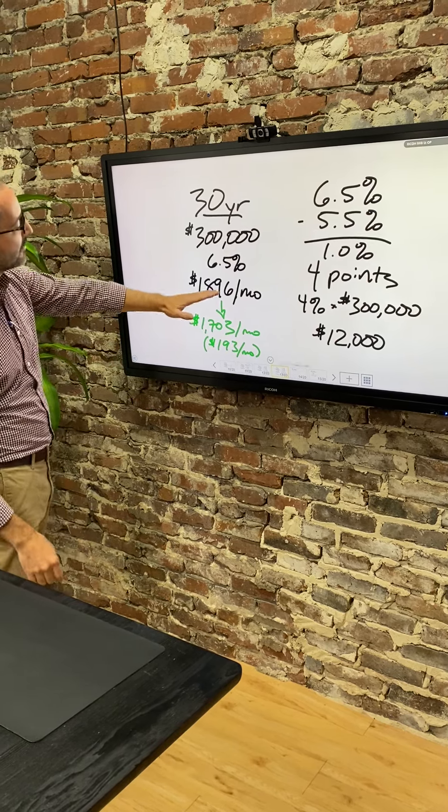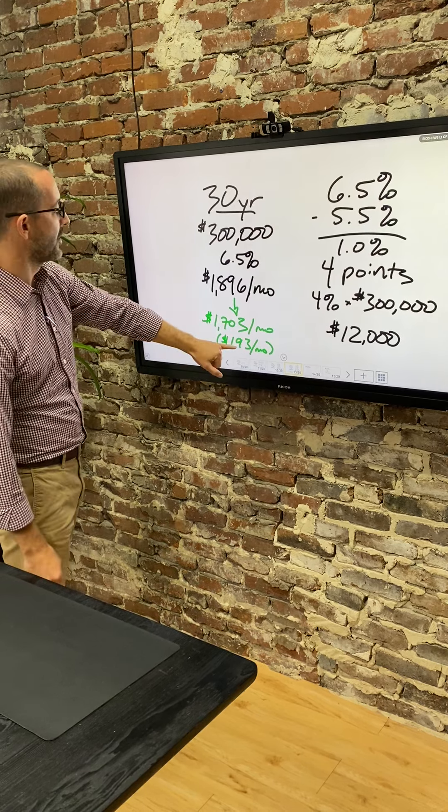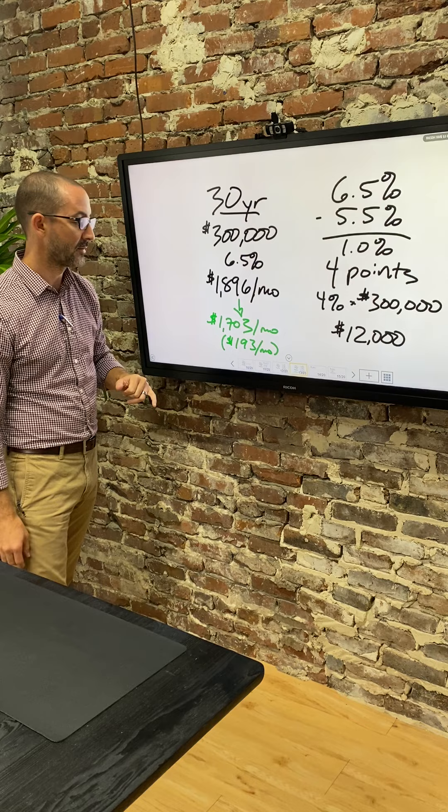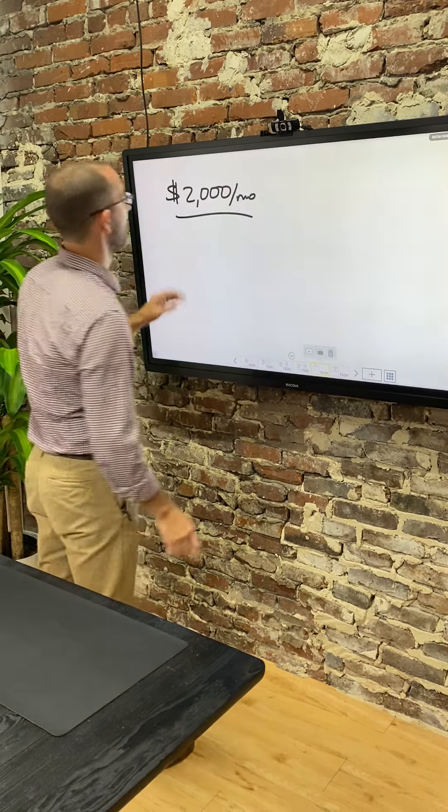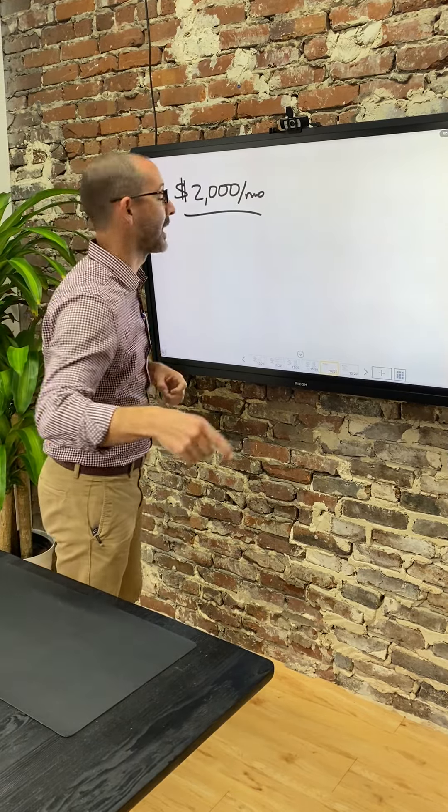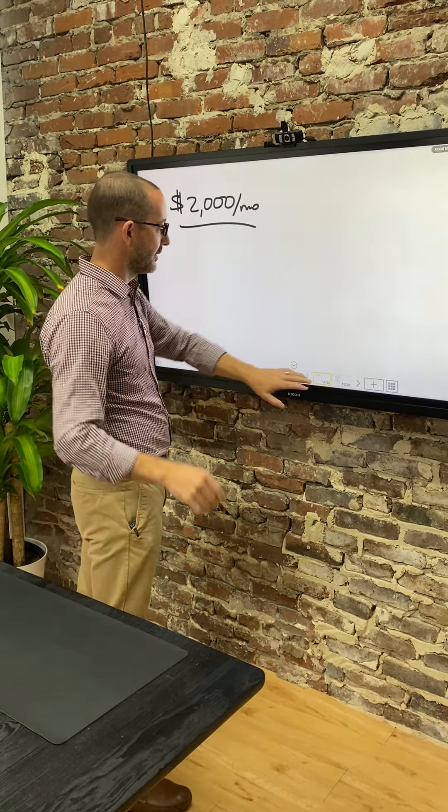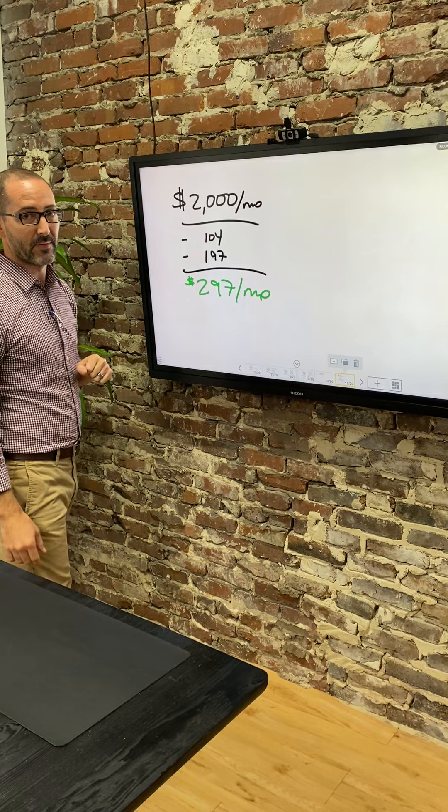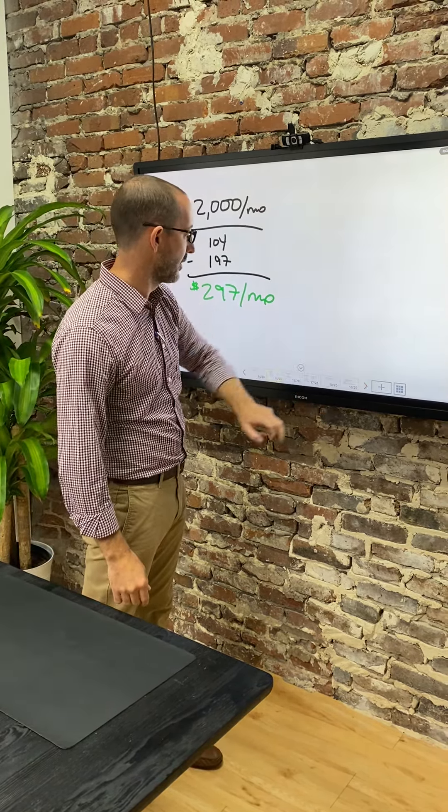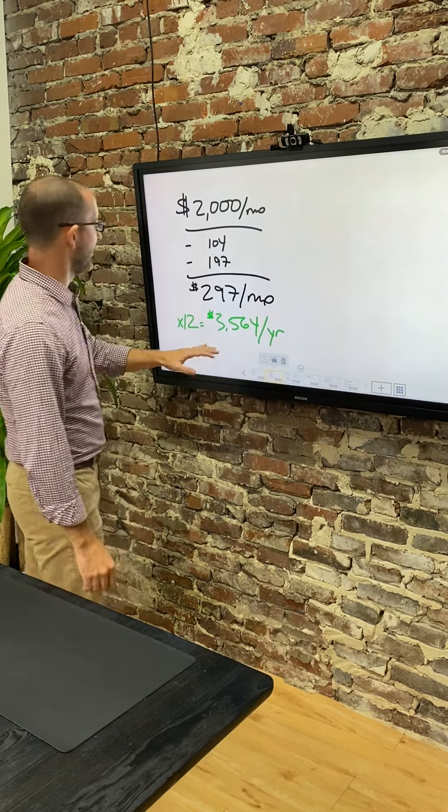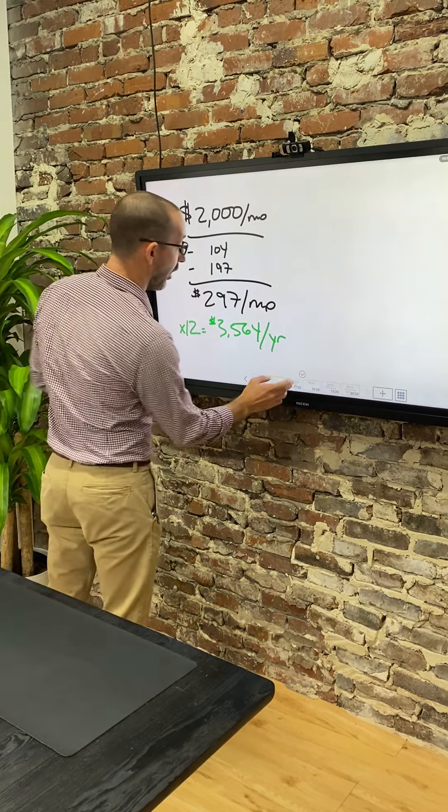Spending that $12,000 will take you down from $1,896 to $1,703. That's $193 extra dollars a month you're saving. That's not chump change. That's good money. Now remember we're starting with a $2,000 a month budget. We're saving you $297 a month. You had to spend $12,000 to do it, but we're saving you $297 a month. That is $3,564 a year. All for spending $12,000.